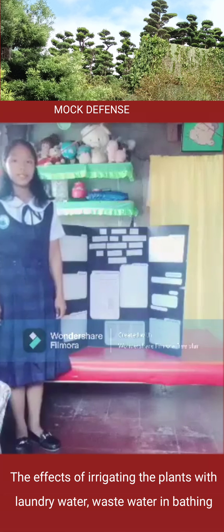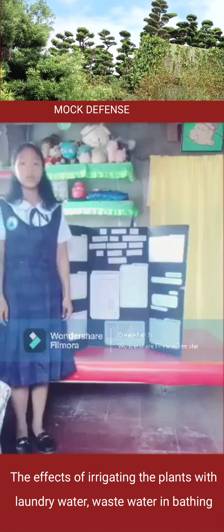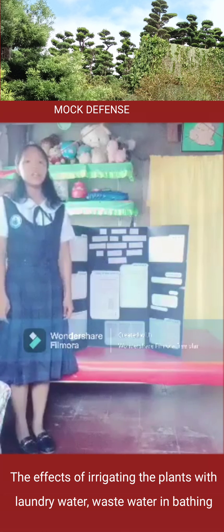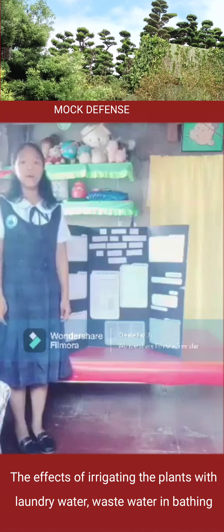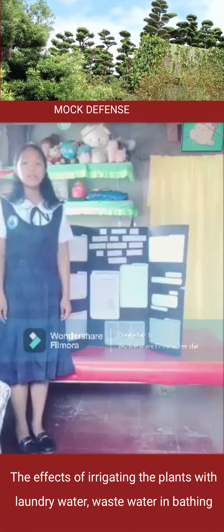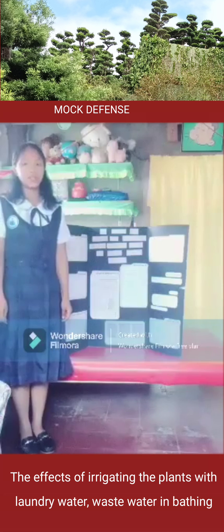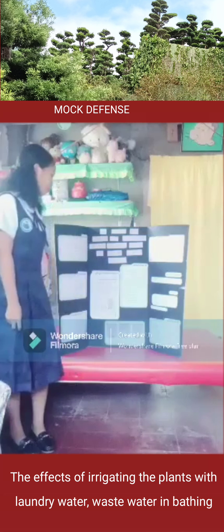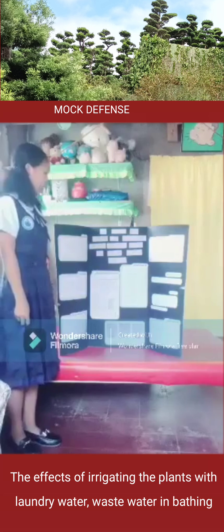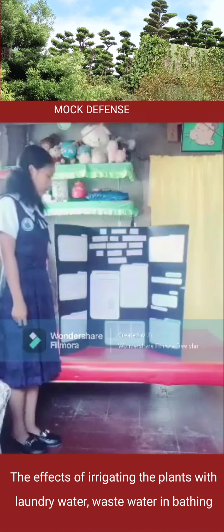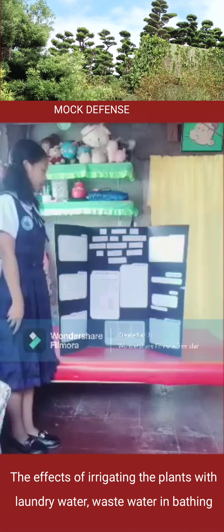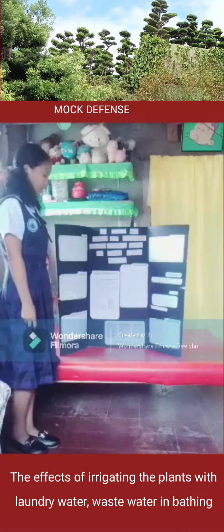Based on my research, we can use laundry water, wastewater, and bathing water to irrigate the plants. Soapy water has some bad effects on plants because it has chemicals that will cause the plants to die, but we can avoid that problem if we use reasonable care. Household wash water, also called gray water, contains food residues and other organic matter that may attract insects and rodents.